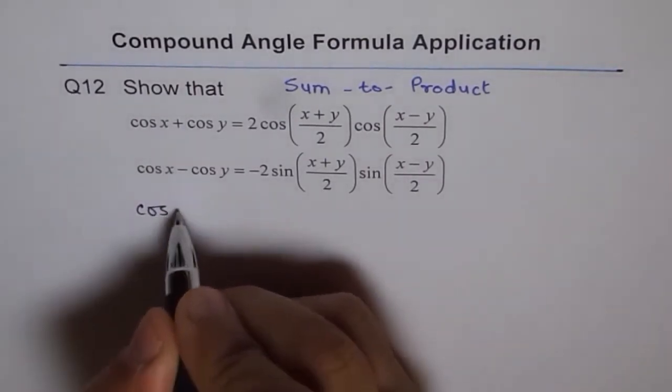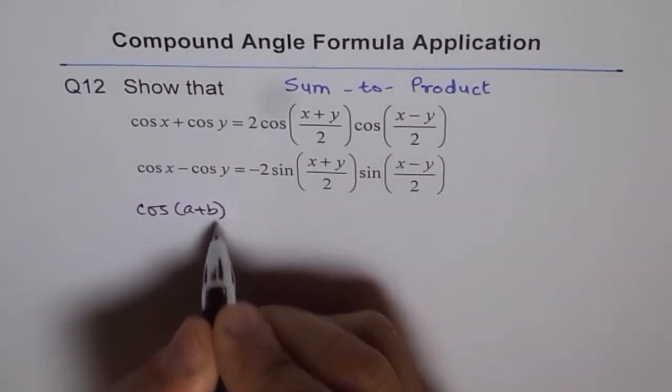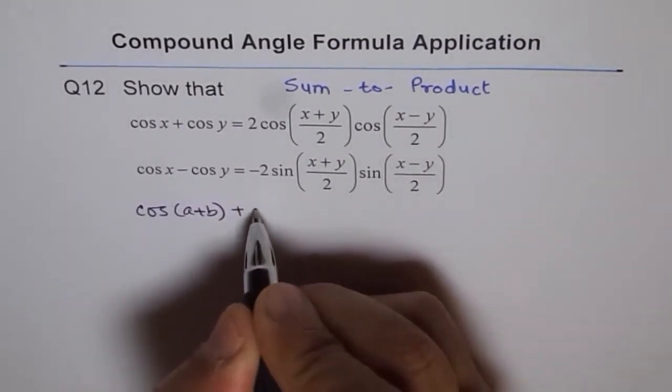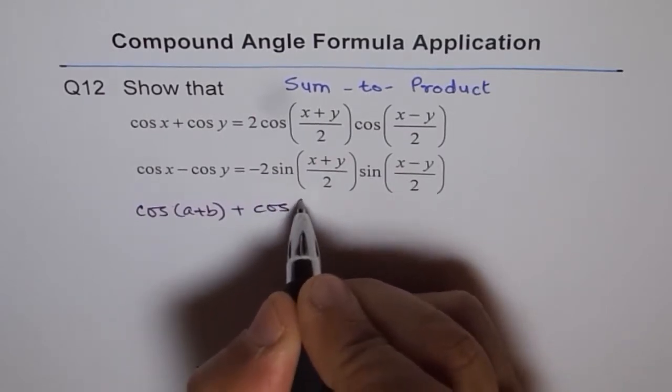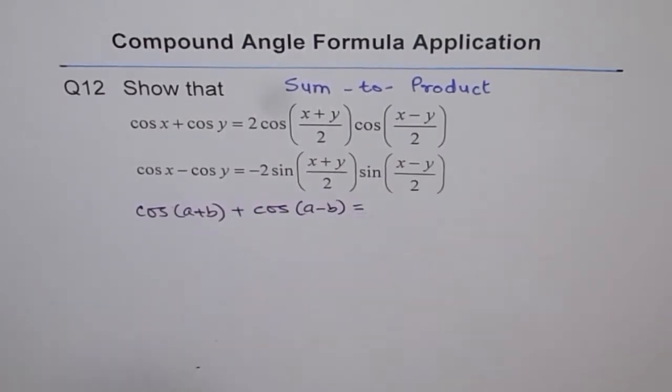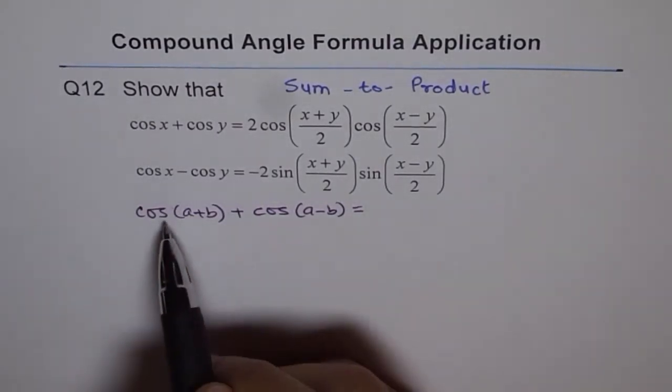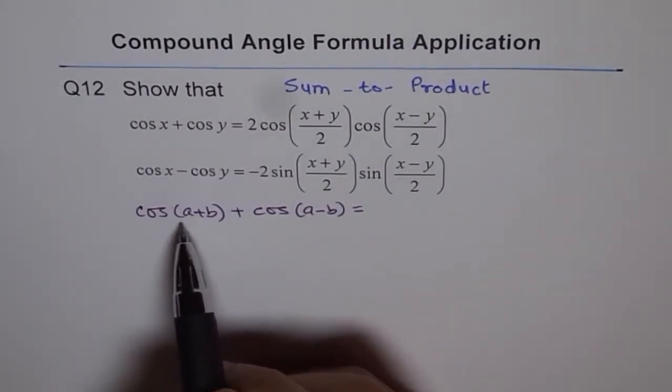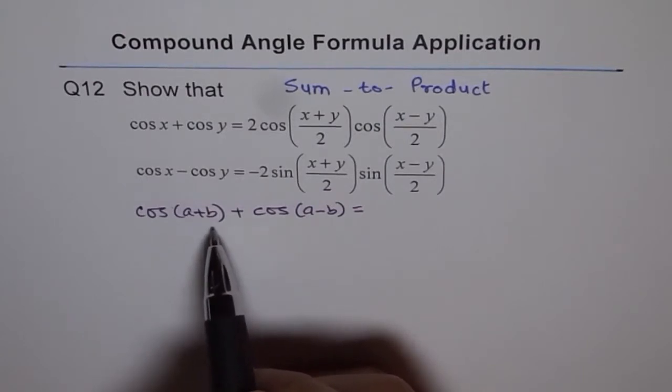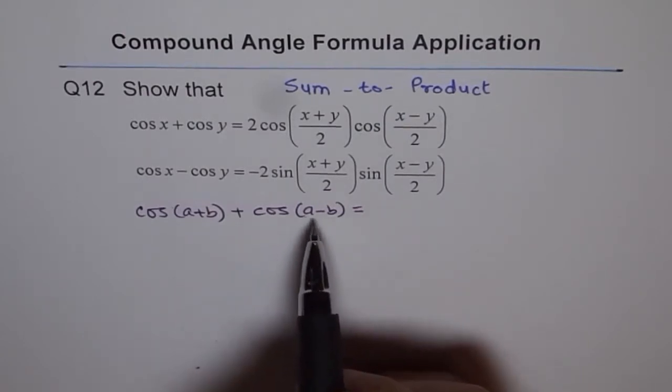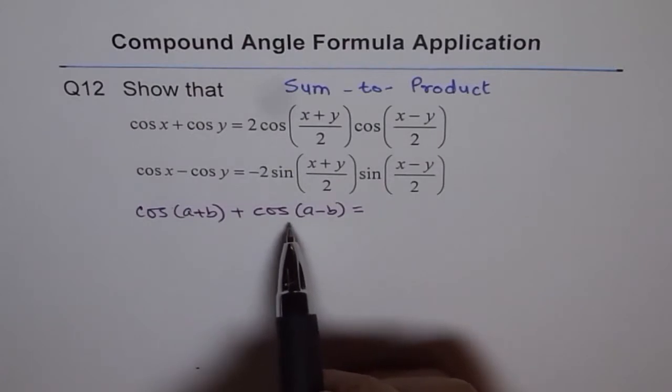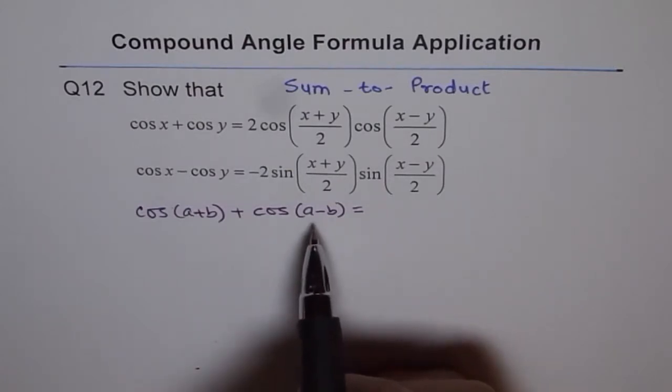That is, cos of a plus b plus cos of a minus b is equal to what? That is the base from where cos a plus b is cos a cos b minus sin a sin b, and cos a minus b is cos a cos b plus sin a sin b.